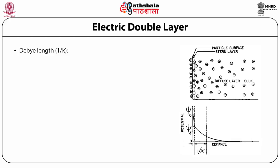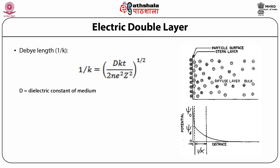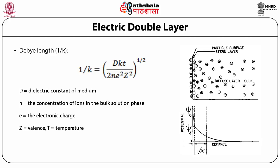This mobile layer of ions has a definite thickness approximated by the so-called Debye length, depicted by 1/κ. The equation for Debye length is: 1/κ = (DkT / 2Ne²Z²)^(1/2), where D is the dielectric constant of the medium, N is the concentration of ions in the bulk solution, e is the electronic charge, Z is the valence, T is the temperature, and k is the Boltzmann constant.